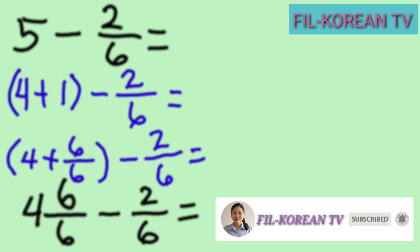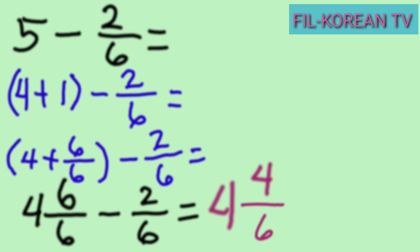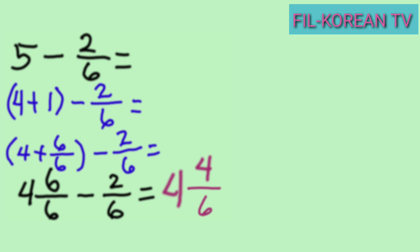To subtract, just subtract the numerators. Subtract 6 minus 2 equals 4. Then, write the whole number 4 and copy the LCD 6. So the answer is 4 and 4 sixths. But we need to reduce this to lowest term because the fraction 4 sixths is not in lowest term. We need to get the GCF of 4 and 6 and divide them by their GCF. The GCF of 4 and 6 is 2. Copy the whole number 4. Then divide: 4 divided by 2 equals 2, and 6 divided by 2 equals 3. So the answer is 4 and 2 thirds.